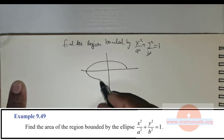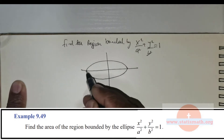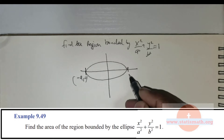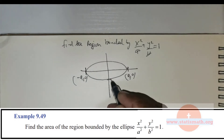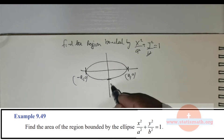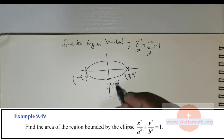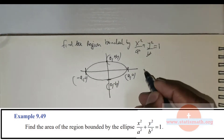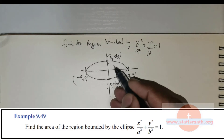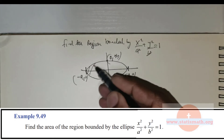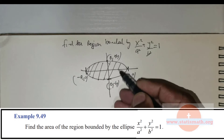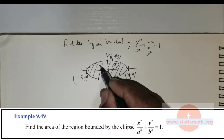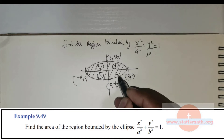So if you were to draw the ellipse, it would be something like this. The major axis is from negative a comma 0 to positive a comma 0, and the minor axis will be from 0 comma negative b to 0 comma positive b. So the required region is all of this. You've got four parts here: first part, second part, third part, and fourth part.